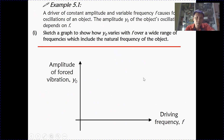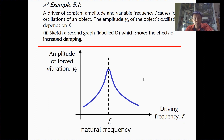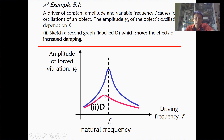Let's look at example 5.1. Part 1 asks you to sketch a typical frequency response graph — from the notes, you can see what it looks like. Part 2 asks about the effect of damping: when damping is increased, the amplitude decreases, the graph becomes broader and spreads over a wider range, and the peak occurs at a frequency smaller than the natural frequency. The resulting graph is sketched in red.